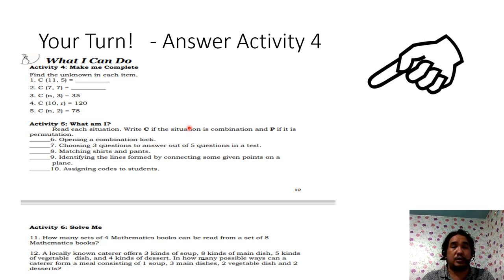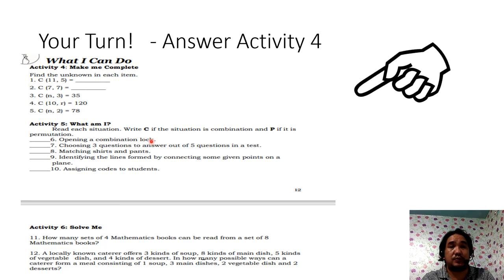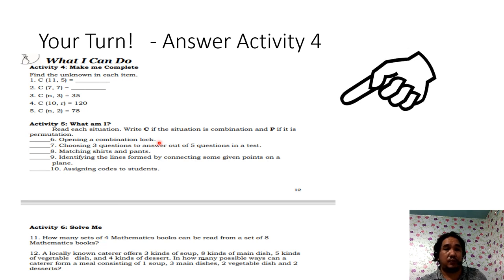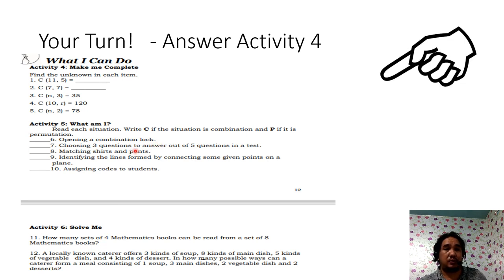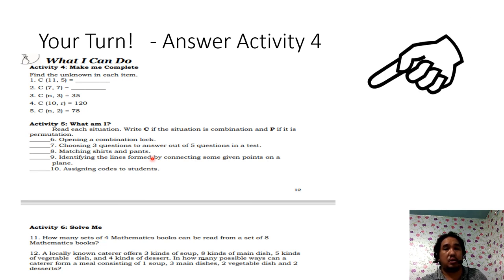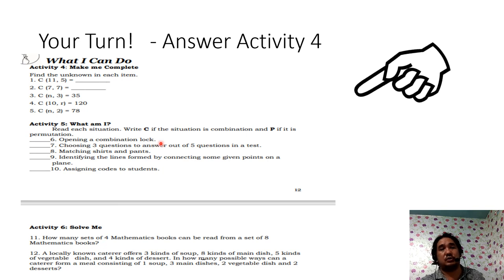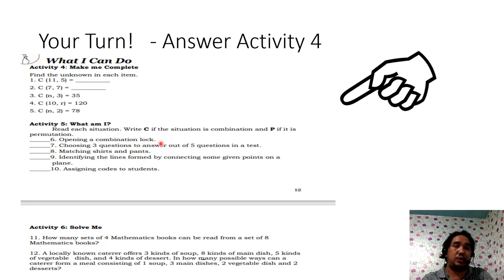Also answer Activity Number 5, where you will identify whether a given situation is a combination or a permutation — write C for combination and P for permutation.